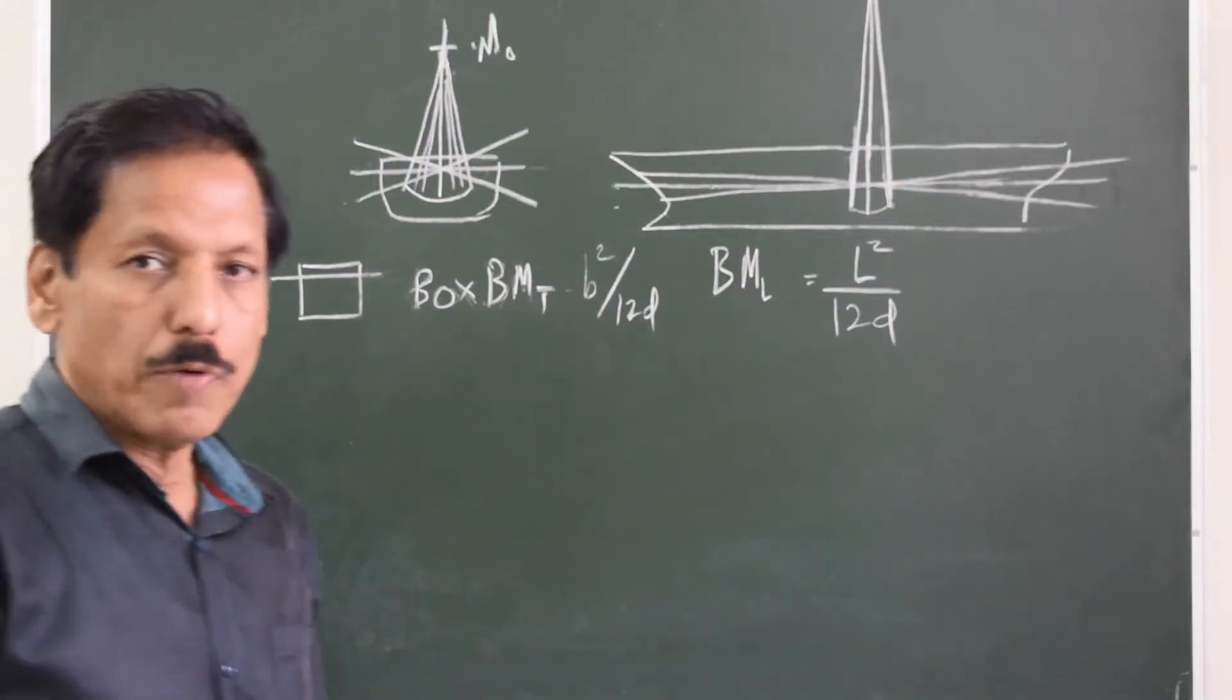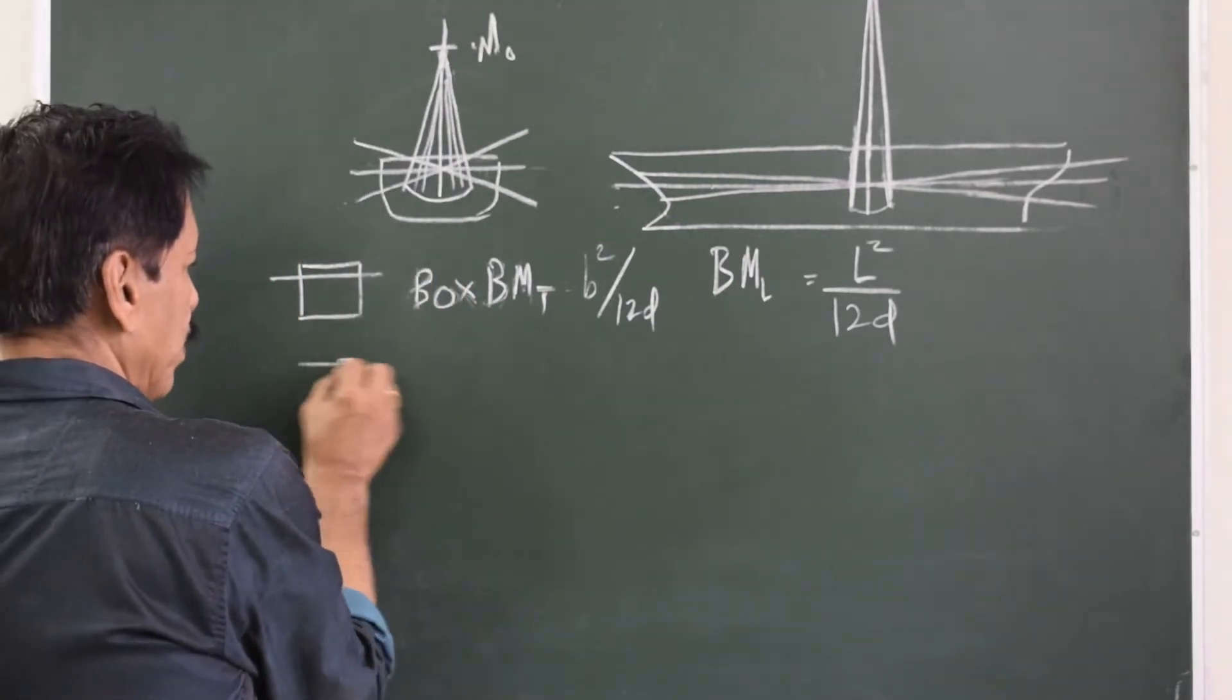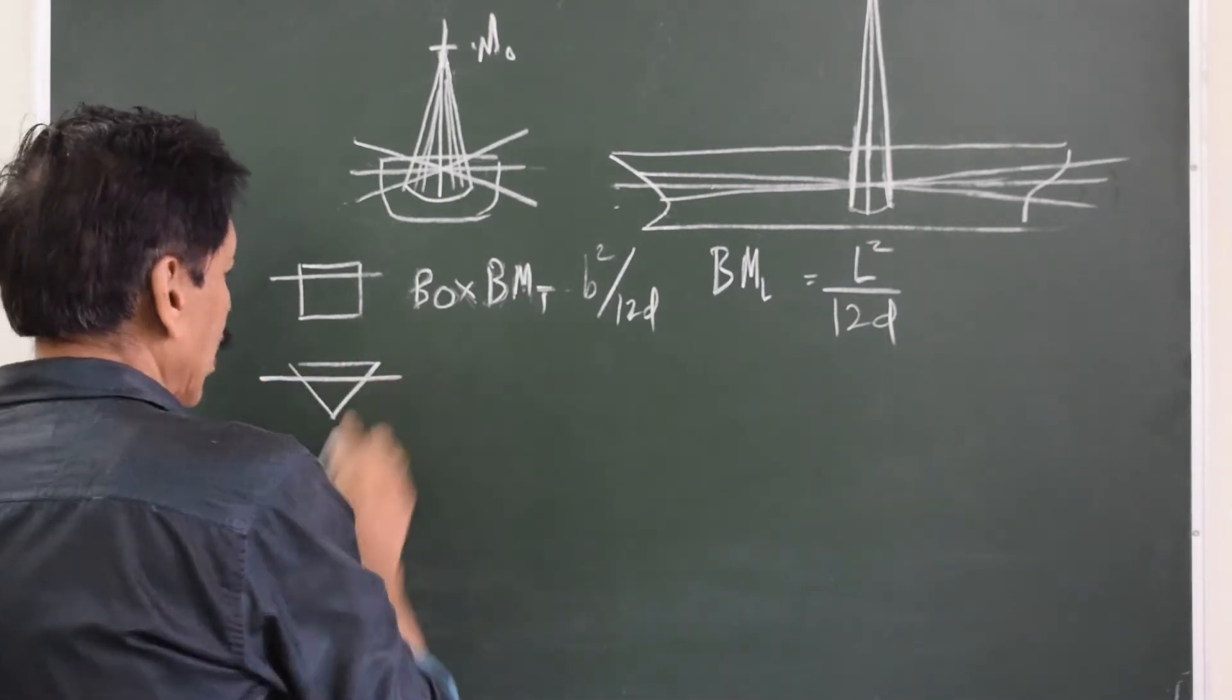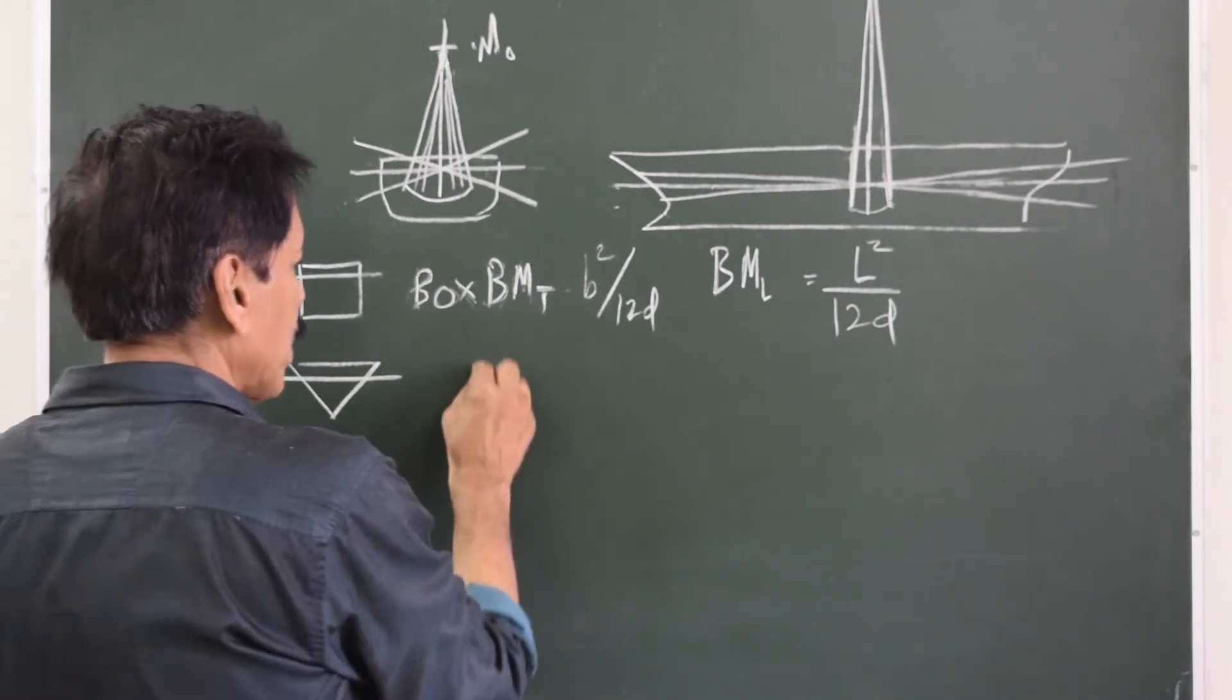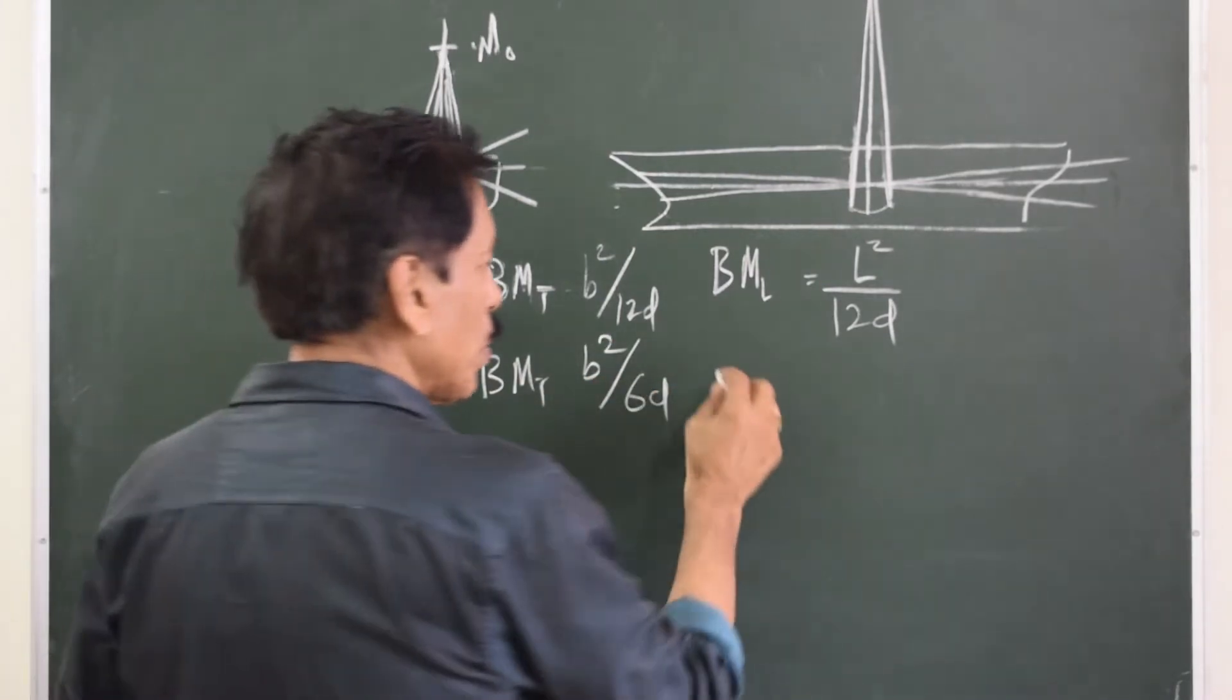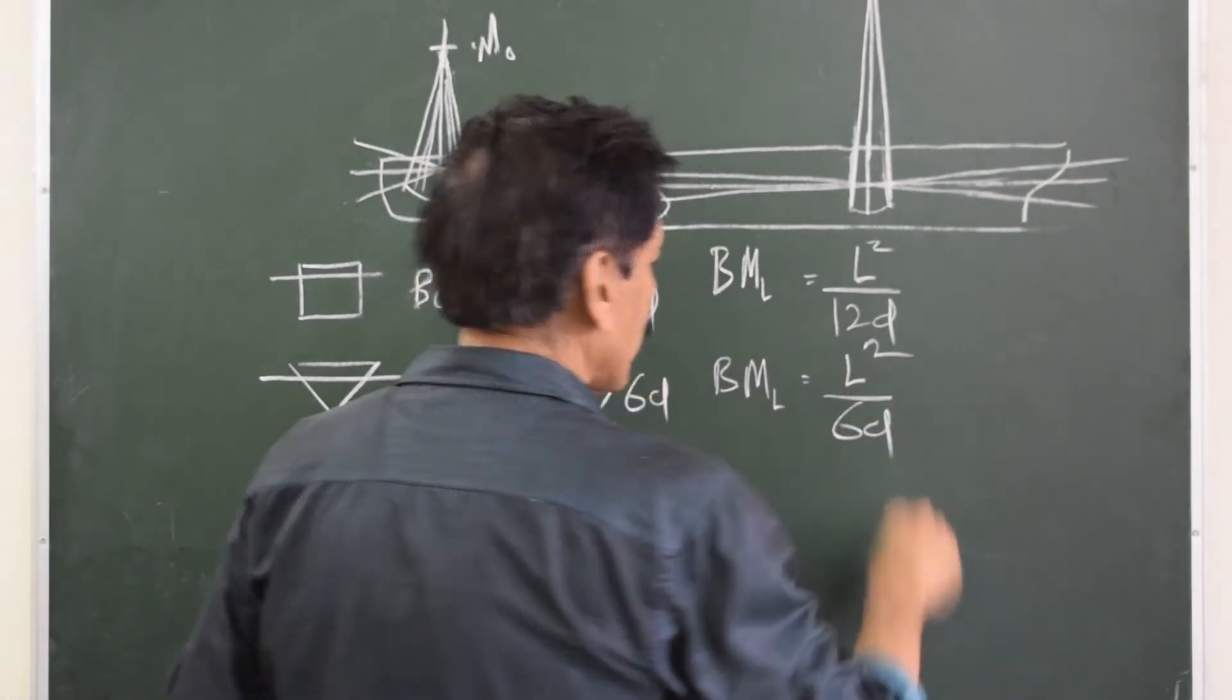So if we talk about a ship that has a triangular transverse section that is uniform, the BM is given by B squared upon 6D, and BML is given by L squared upon 6D.